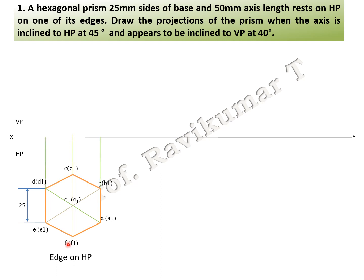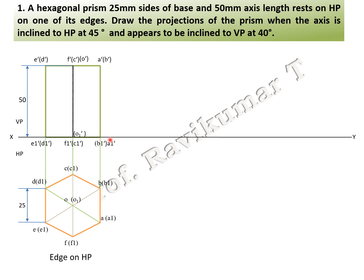Draw projection lines upward. O and O1 are the axis points. Take a 50 mm height and complete the rectangle box. The axis line overlaps with O and O1, so the axis line is not visible. For naming the front view: A1 is visible, B1 is invisible. Top face: A is visible, B is invisible. Similarly, F is visible, C is invisible. E is visible, D is invisible. This is the naming of the front view.